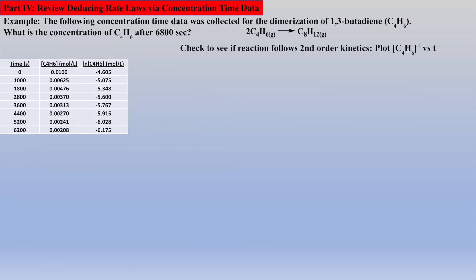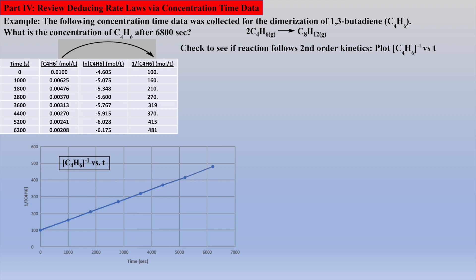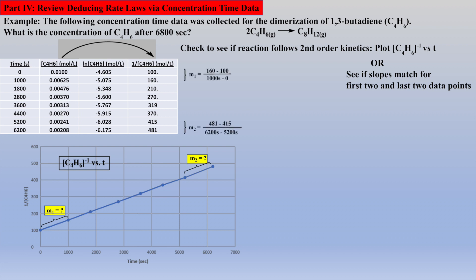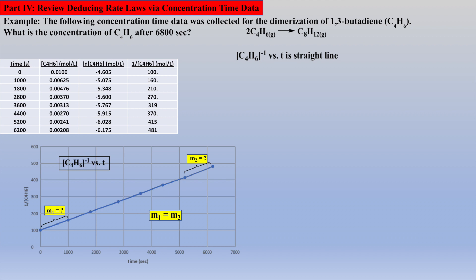So now, let's check if the reaction follows second-order kinetics by plotting 1 over the concentrations of A versus time, which will require the reciprocals of all the concentrations. The data produces a straight line, thus this reaction appears to follow second-order kinetics. Alternatively, and the recommended much quicker method, is to calculate if the slopes of the first two and last two data points match. The two slope calculations are close enough to be considered a match, thus this reaction follows second-order kinetics. We have now completed the first step of our proposed plan, which was to linearize the given data and deduce that the reaction follows second-order kinetics.